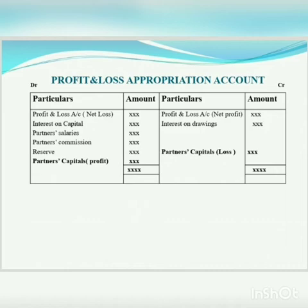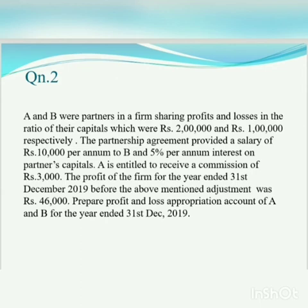The remaining balance after all appropriations is shared between the partners according to their profit-sharing ratio and credited to their respective capital or current accounts. This completes the profit and loss appropriation account.